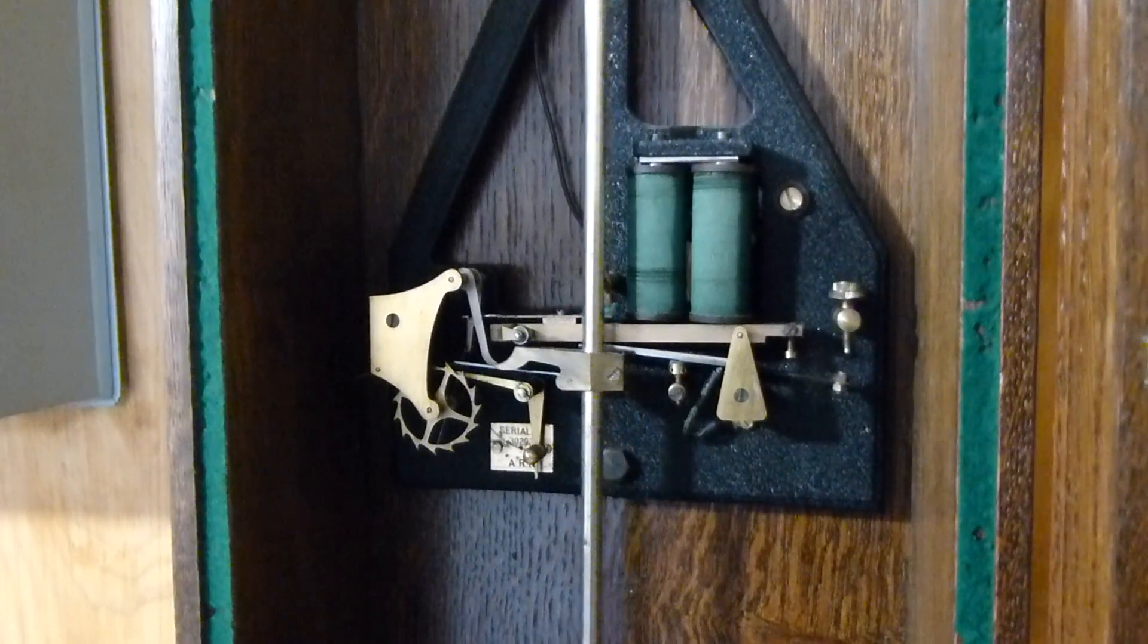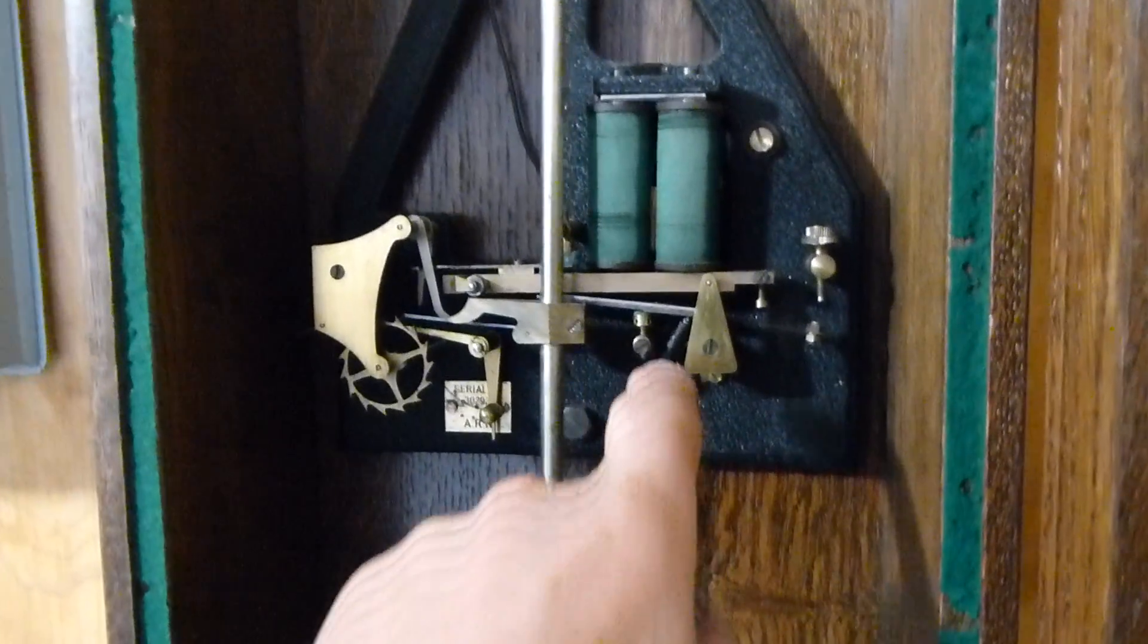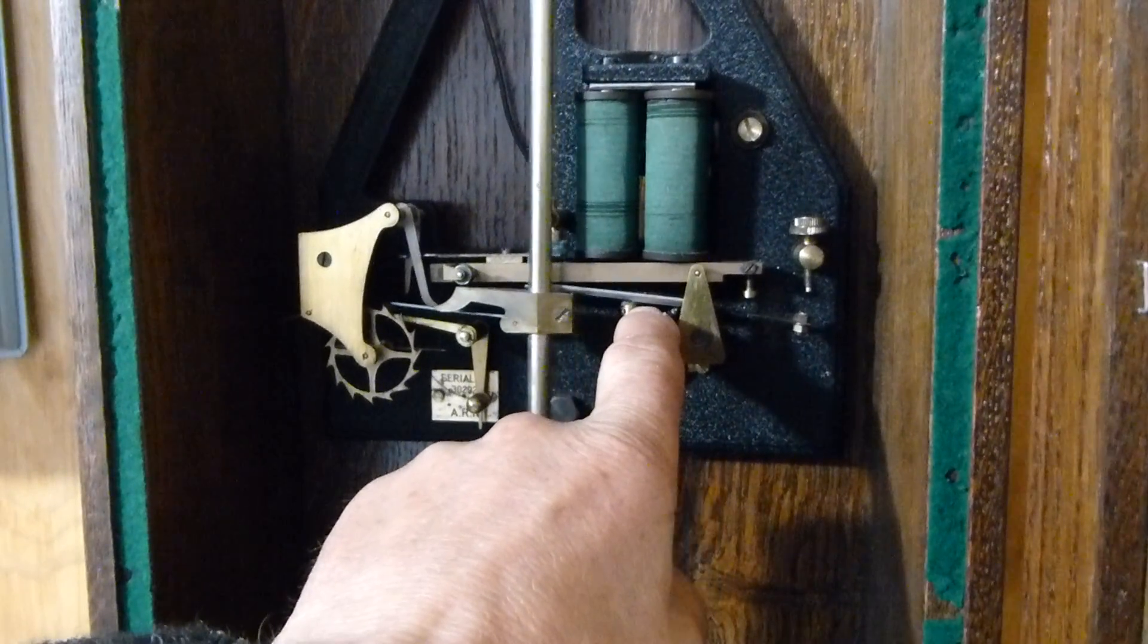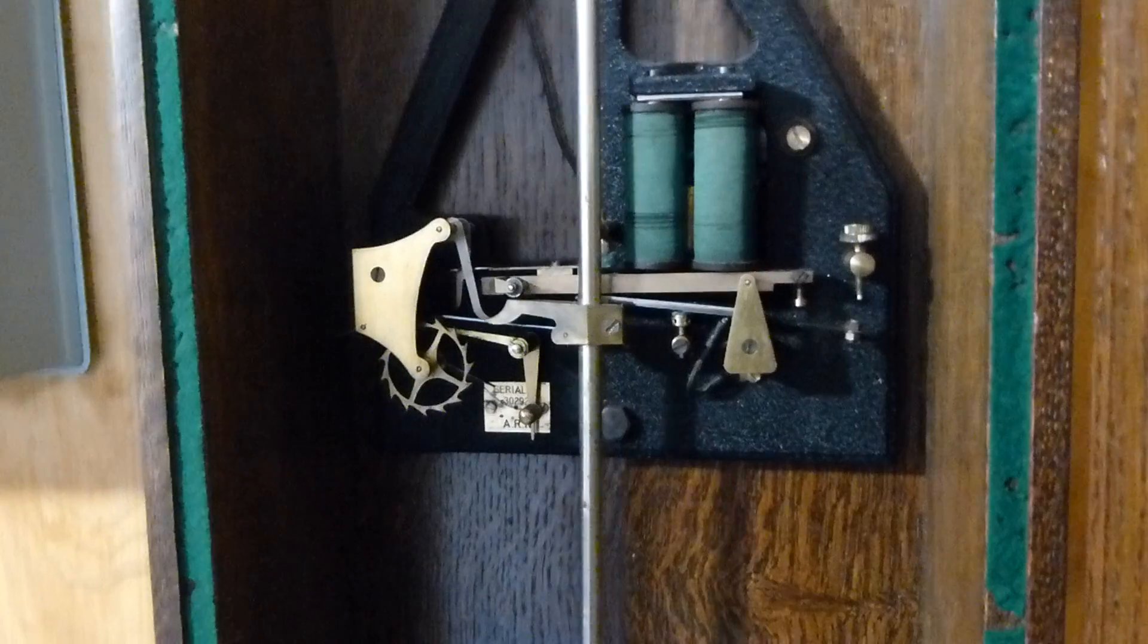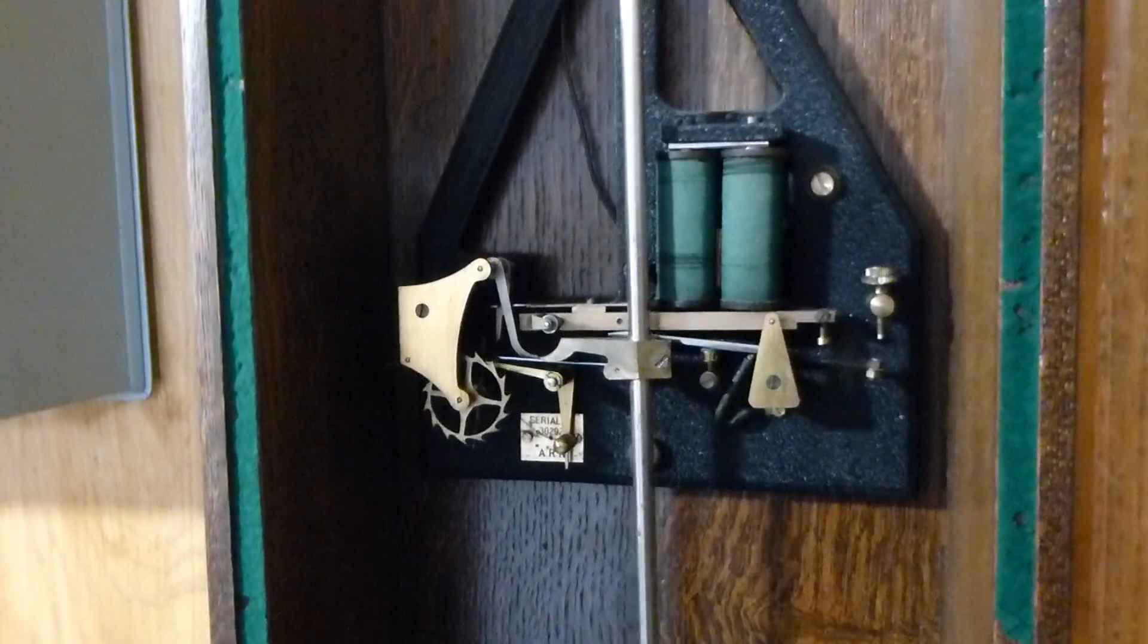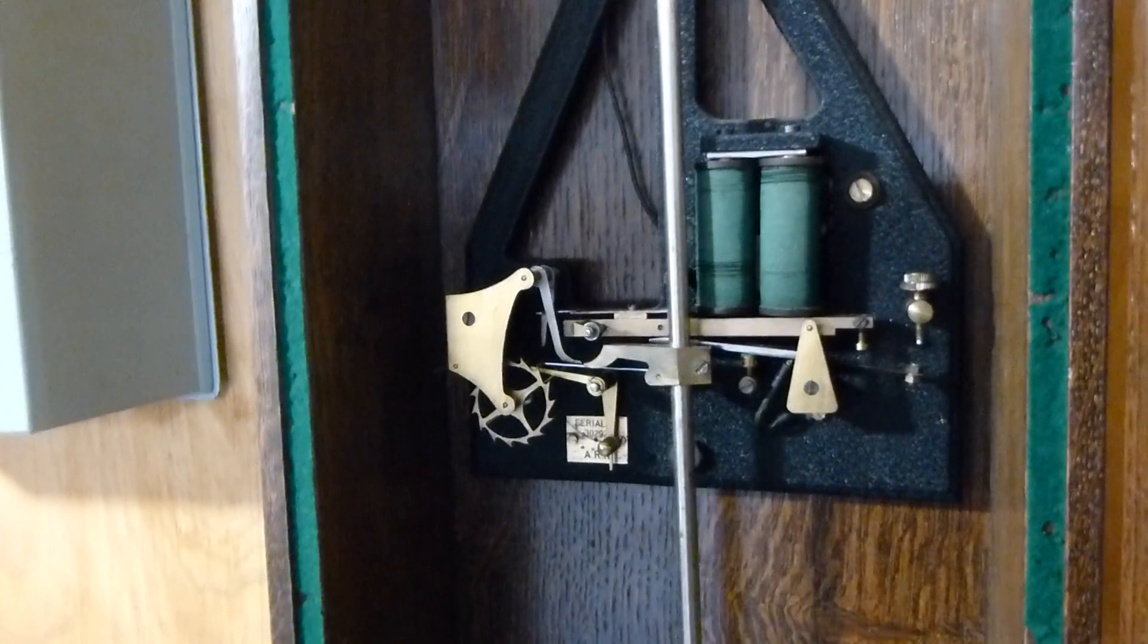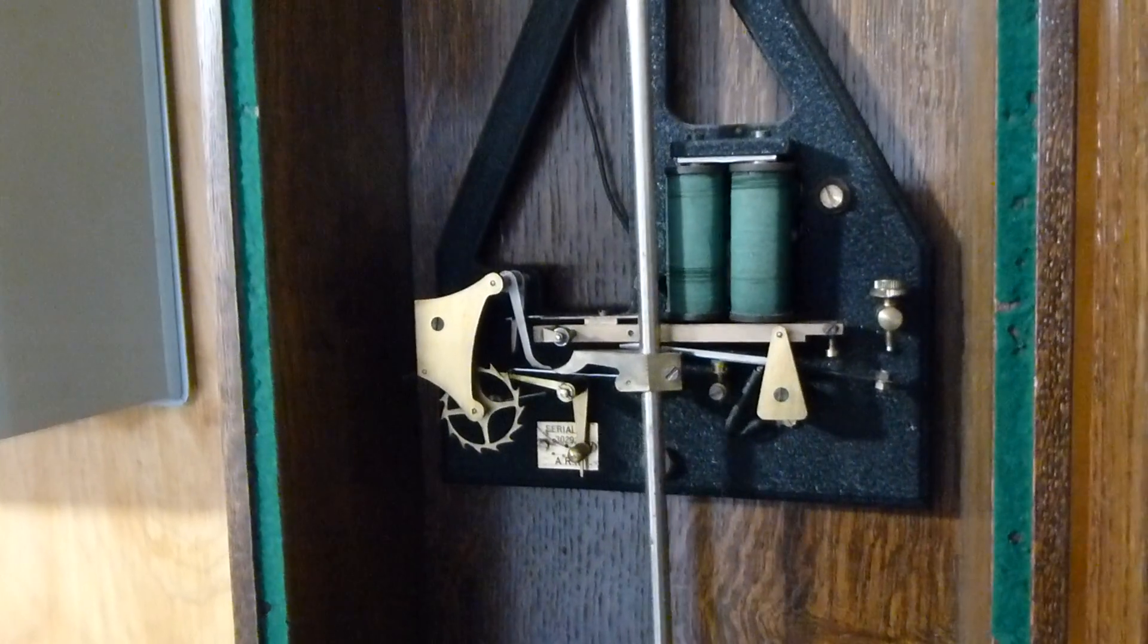But the main problem with this clock is that the armature is a long way from the magnet, so the armature is this steel part here which is attracted by the magnet after each impulse. It takes quite a bit of current and voltage to return the gravity arm to its position.